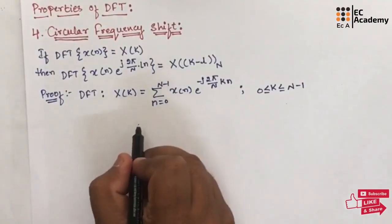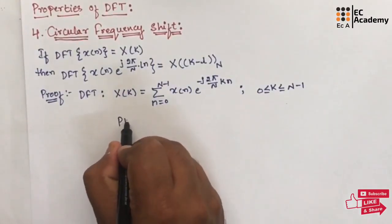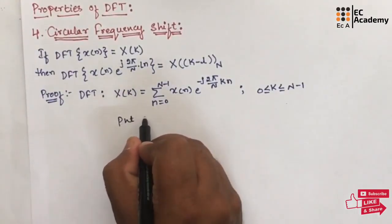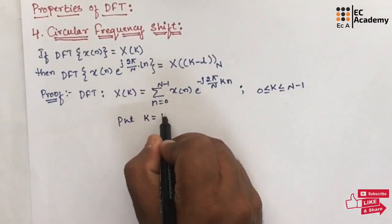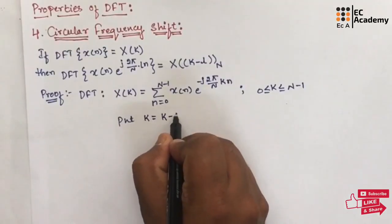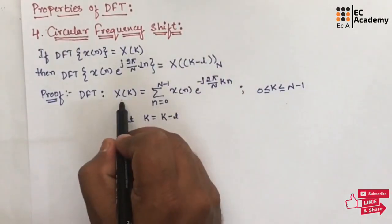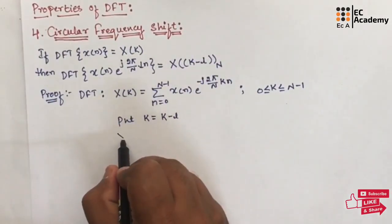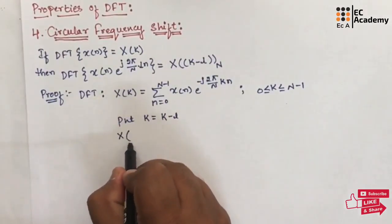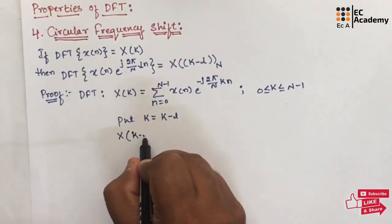In this above equation, let us put k equal to k minus L. So if you put k equal to k minus L, the above equation will be x of k minus L.